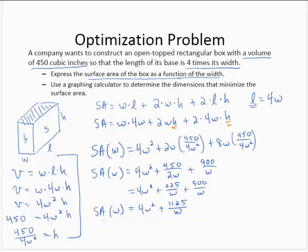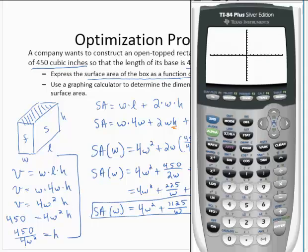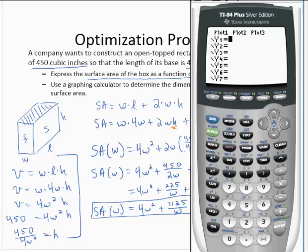So there's what I would hope you get as the result for the first part of the exercise. Now use a graphing calculator to determine the dimensions that minimize the surface area. So we have the surface area function. Now let's go to our graphing calculator. Input that function using x as our w, so I'd have 4x squared plus 1125 divided by x.